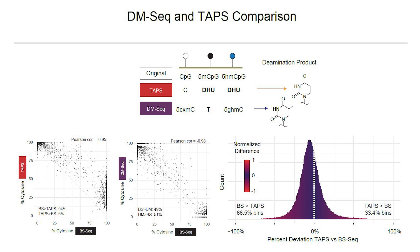EM-seq is another enzymatic method that's currently commercially available from NEB, but this doesn't distinguish 5-methylcytosine from 5-hydroxymethylcytosine. And earlier this year, a group in Cambridge invented five-letter and six-letter sequencing workflows, which may be commercialized soon, but require you to spend half of your sequencing reads on genetic information, which might not always be needed in the same exact workflow.